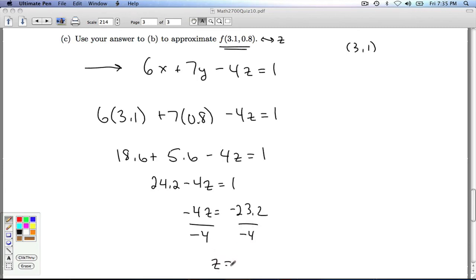Divide that by negative 4. And let's see. I'm just going to go in 5 times. Bring down the 32. So 5.8. So f of 3.1 comma 0.8 is going to roughly be 5.8. So that'll do it for checkpoint quiz 10.